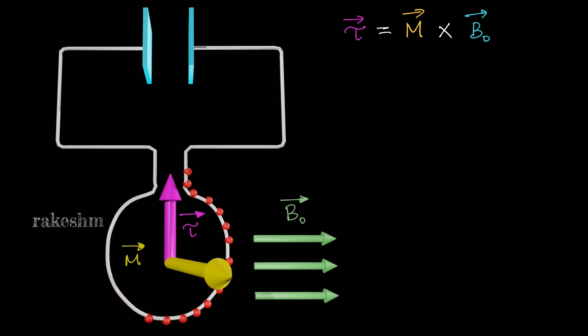You can observe here that this torque is turning the loop. This turning effect can be visualized by the rotation of the magnetic moment vector. The magnetic moment is perpendicular to the plane of the coil. So because the coil is turning, you can see that this vector is also turning.